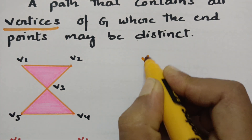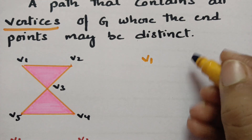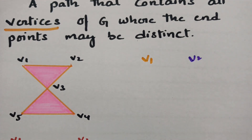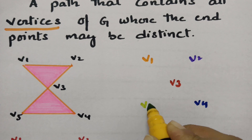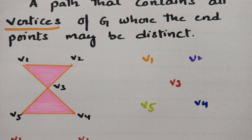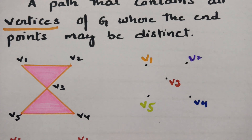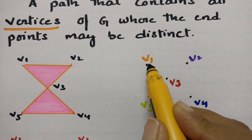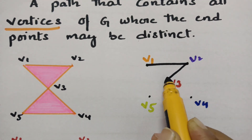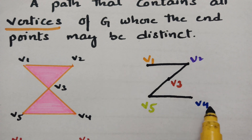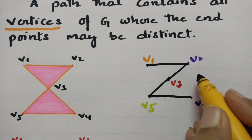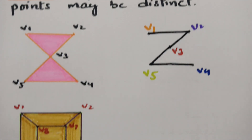So this is v1, v2, v3, v4, and v5. There are five vertices and I have to cross each and every vertex at least once. The path I am taking is from v1 to v2, v2 to v3, then v3 to v5, and next v5 to v4. I have crossed all the vertices exactly once with no repetition. So this is nothing but the Hamiltonian path.